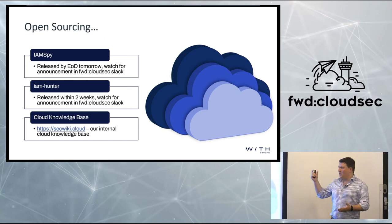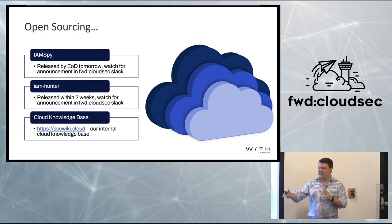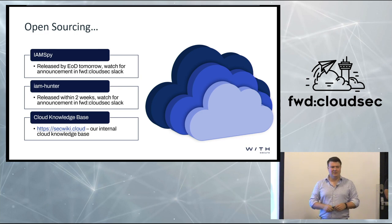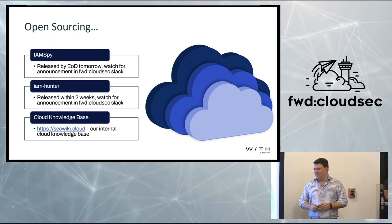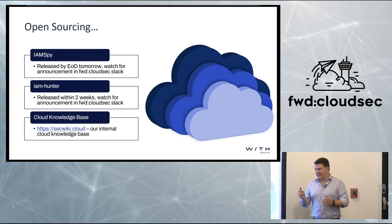So to wrap up what we're open sourcing: IAMSpy — check the CloudSec Slack tomorrow for the GitHub link. IAMHunter — a couple of weeks from now once we've finished tidying up the code base. And as a bit of an Easter egg, we've also just released our internal cloud security knowledge base up on the internet for everyone to have a look at, and the repository for that will also be open source. The approach we've taken is really to gather up and reference all of the existing material that the community has put together — not trying to reinvent the wheel. We've had it internally for a while and finally got permission to release it.